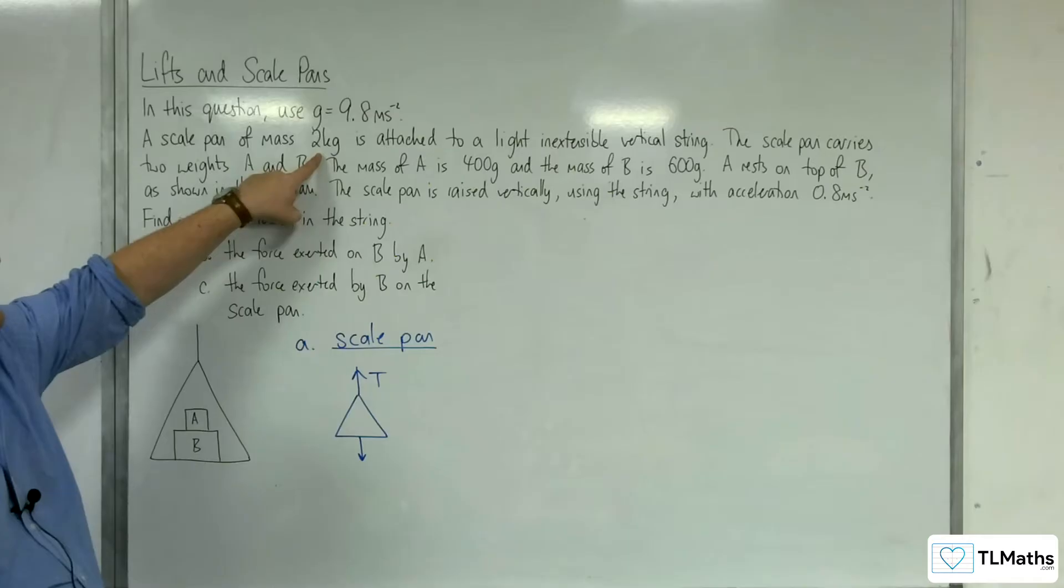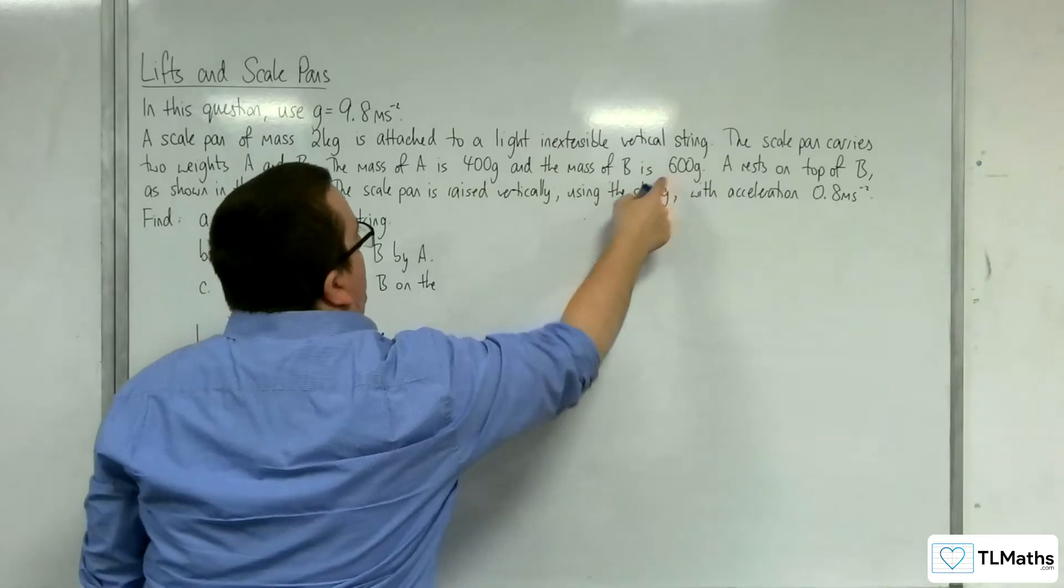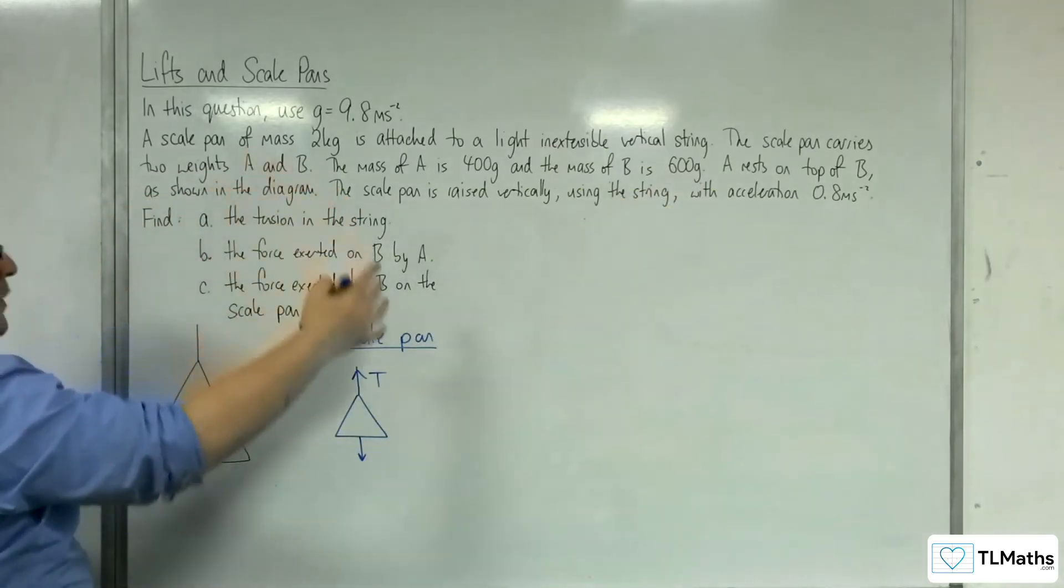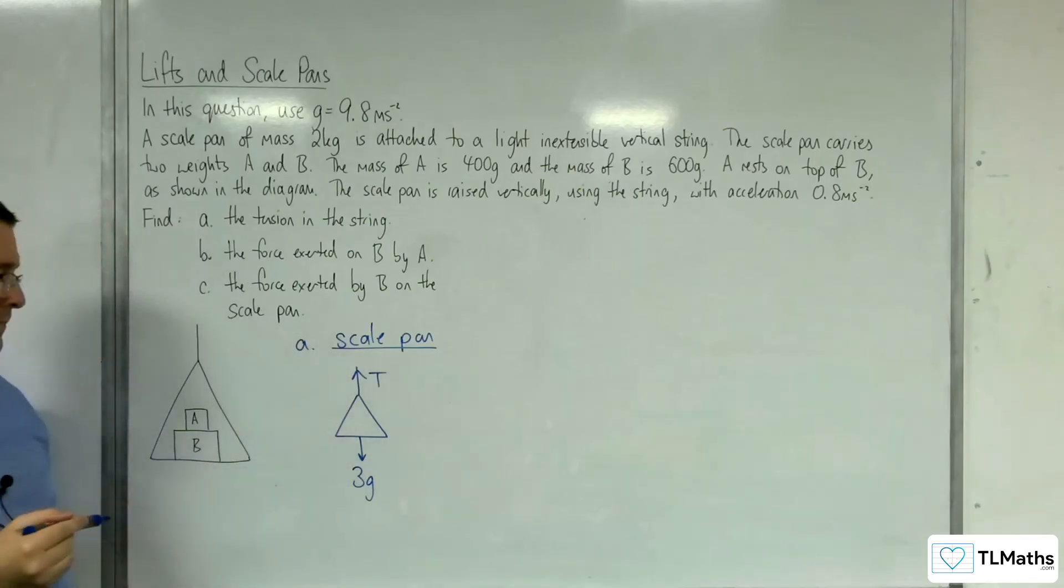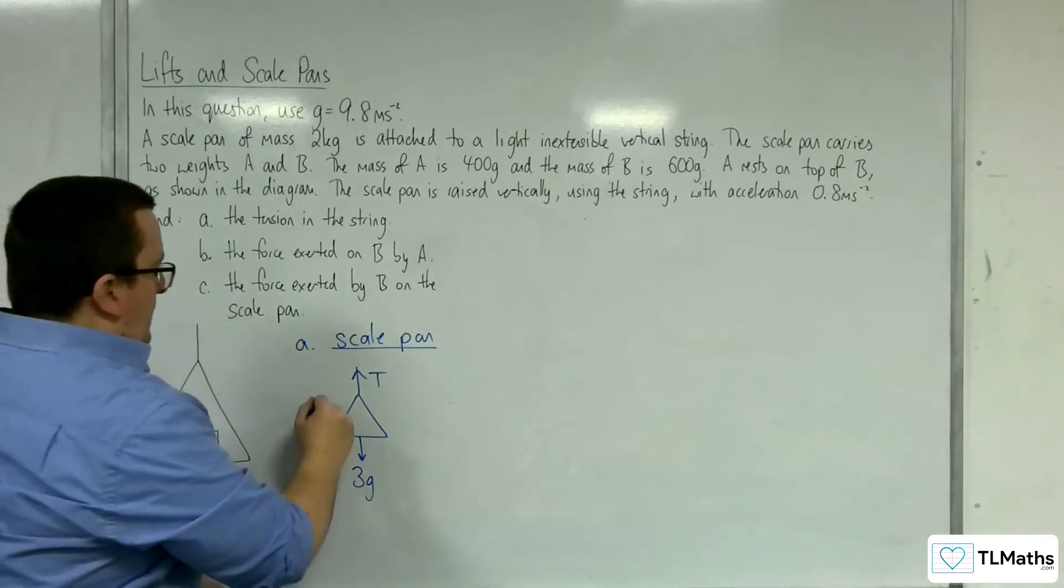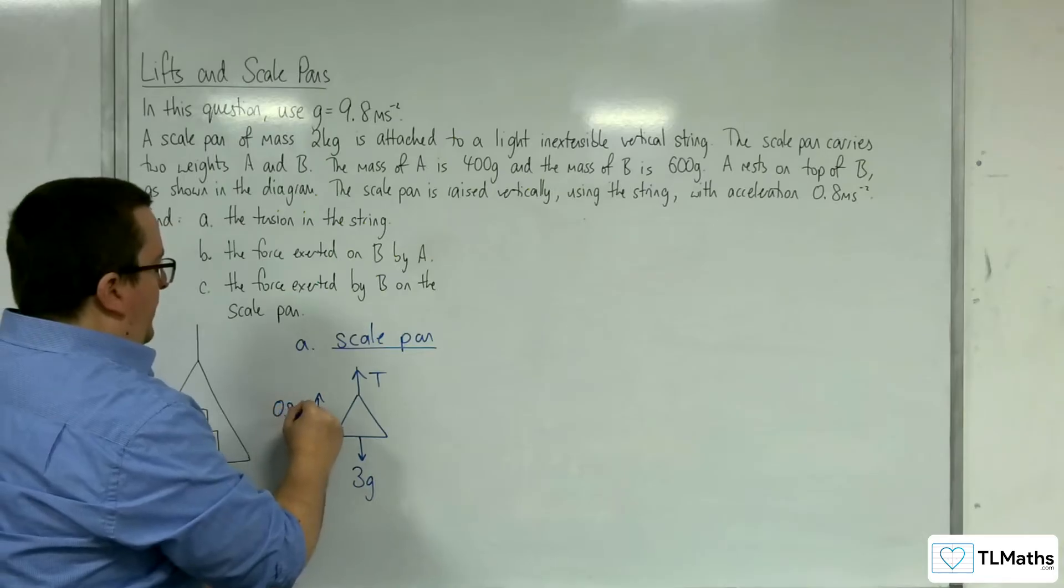plus the mass of A, plus the mass of B. Now, 400 grams and 600 grams is 1 kilo, so in total we'll have 3 kilos, which is 3 lots of g for its weight. And this is accelerating upwards at 0.8 metres per second per second.